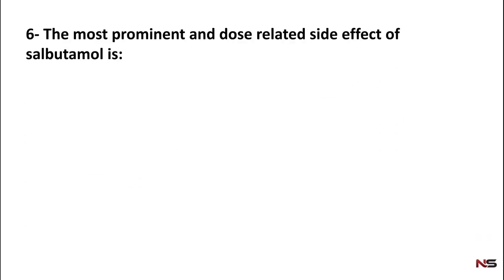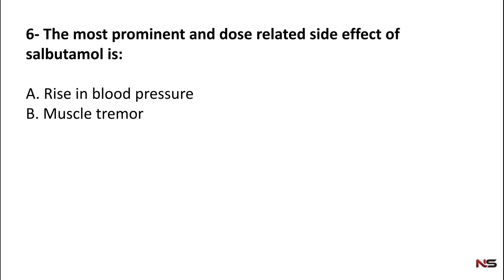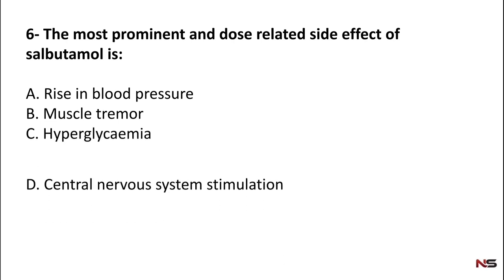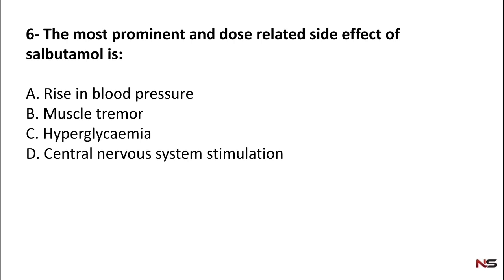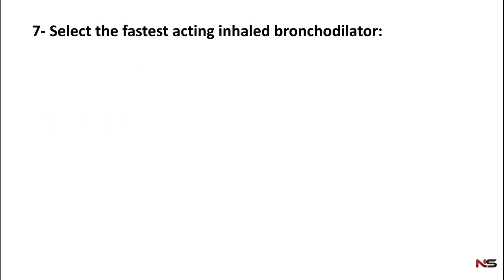Question 6: The most prominent and dose-related side effect of salbutamol. Options: rising blood pressure, muscle tremor, hyperglycemia, central nervous system stimulation. The correct answer is muscle tremor — salbutamol's dose-related side effect is muscle tremor.